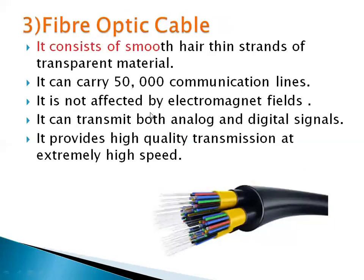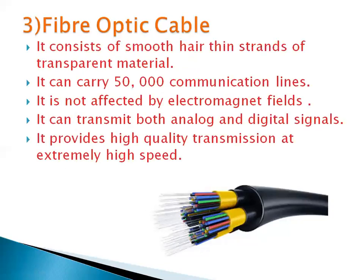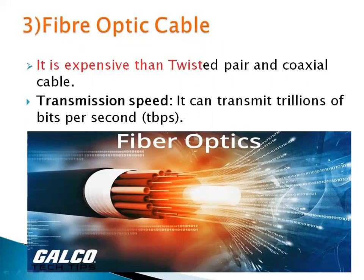Number 3: Fiber optic cable. It consists of smooth, hair-thin strands of transparent material. It can carry 50,000 communication lines. It is not affected by electromagnetic fields, and it can transmit both analog and digital signals. It provides high-quality transmission at extremely high speed. In this figure, you can see the hair-thin strands made of transparent material, filled with glass inside. It is a multi-mode cable, and it is really hard to cut. It is more expensive than twisted pair and coaxial cable, and it can transmit trillions of bits per second.